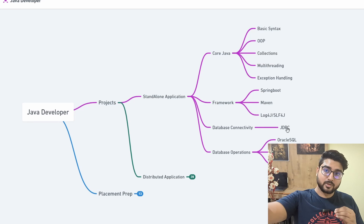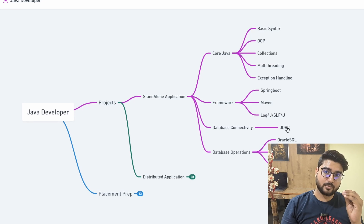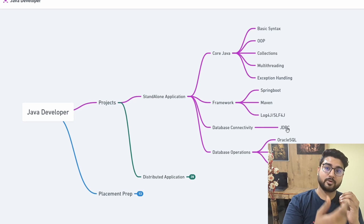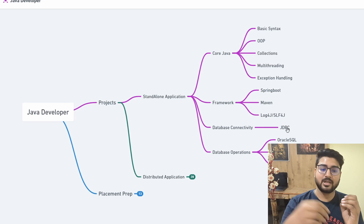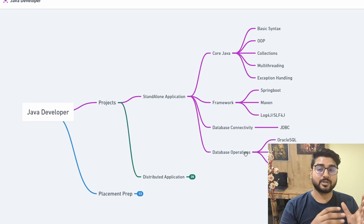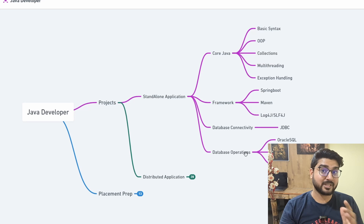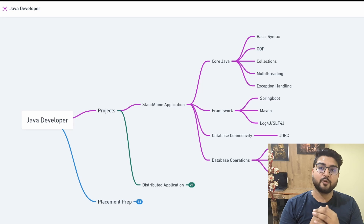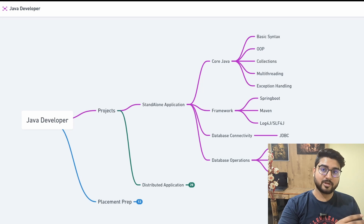JDBC is essentially how your Spring Boot application connects to a database. You can build a standalone application where you make GET requests to retrieve data, or POST/PUT requests to write data to the database. If you're working with databases you also need good SQL knowledge. The three databases I'd suggest are Oracle SQL (most in demand with Java/Spring Boot), MySQL, and MongoDB — I'd recommend starting with Oracle SQL.